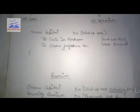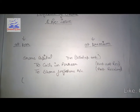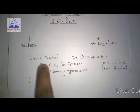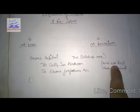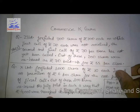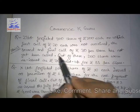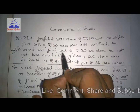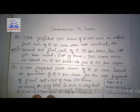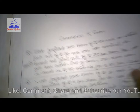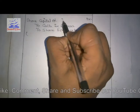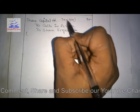Before we solve, let us recall our general entry format. Share capital equals called-up amount, less calls in arrear, plus share forfeiture amount received. Now, since the second and final call of ₹30 has not yet been called, the called-up amount is ₹100 minus ₹30, which equals ₹70. So the share capital entry will be ₹70 into 300 shares.